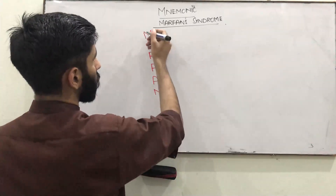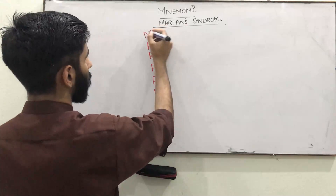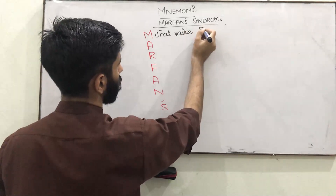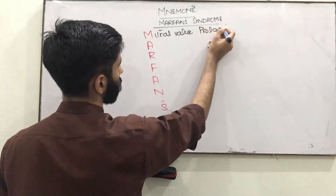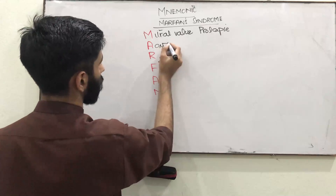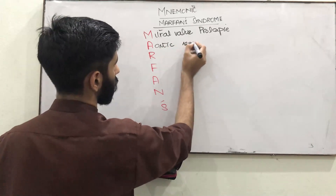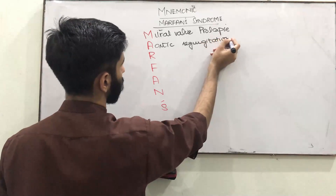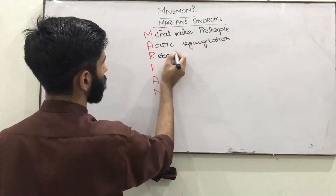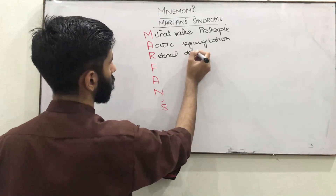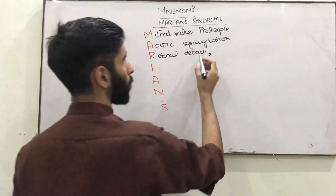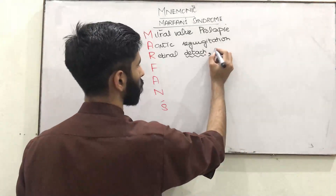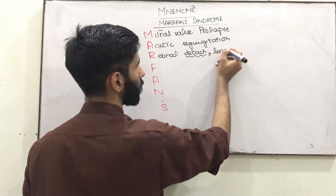In the MARFAN mnemonic: M is for mitral valve prolapse. A is for aortic regurgitation. R is for retinal detachment — and from detachment, remember that the lens also detaches in Marfan syndrome, specifically bilateral lens subluxation.